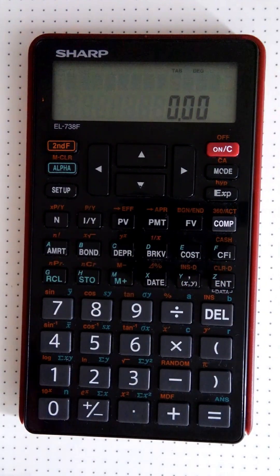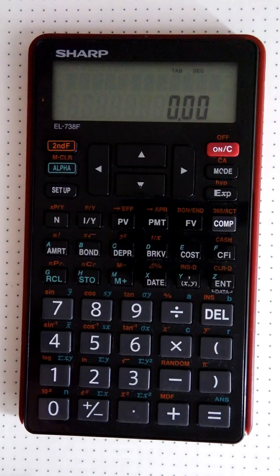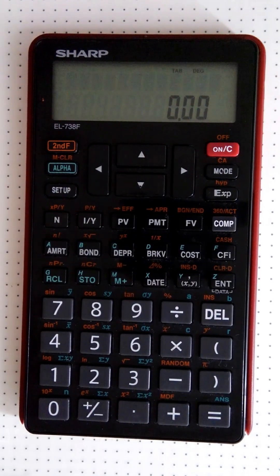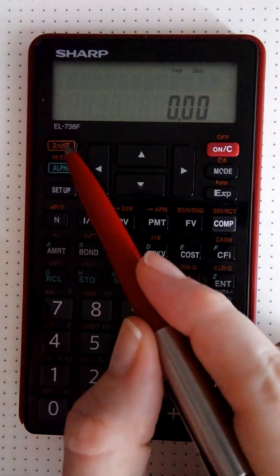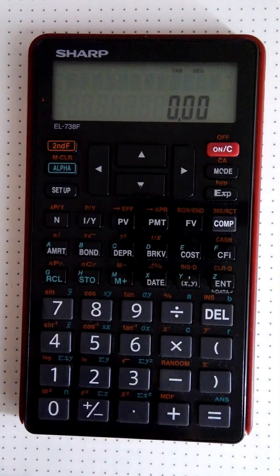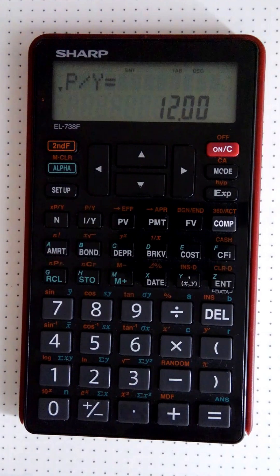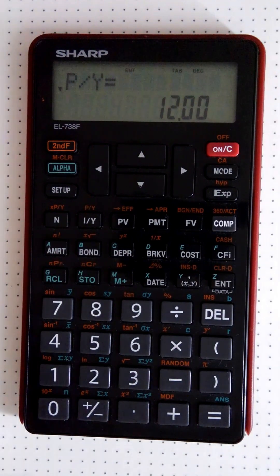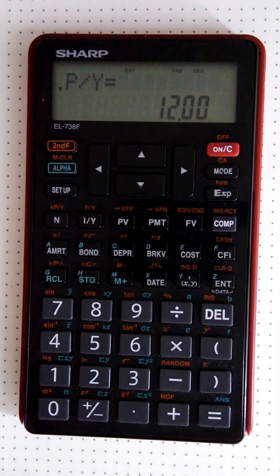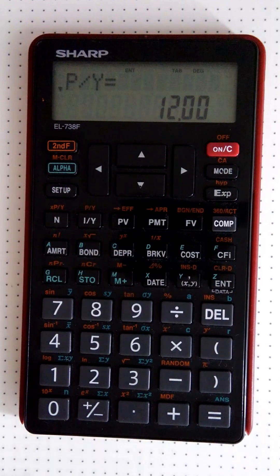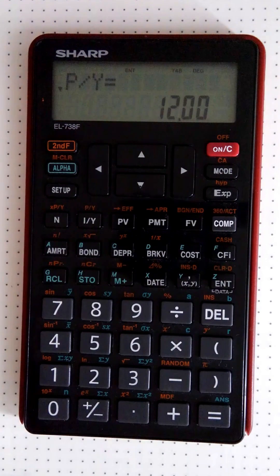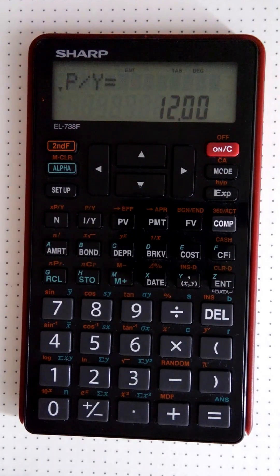Now, I've already spoken about this. I spoke about payment periods and compounding periods. How do we get there? So we'll have the second function button to get to the PY. So second function PY. And this is our number of payments per year. So for our basic compound interest questions, the number of payment periods and the number of compounding periods will coincide. We will look at examples where this doesn't happen later on.